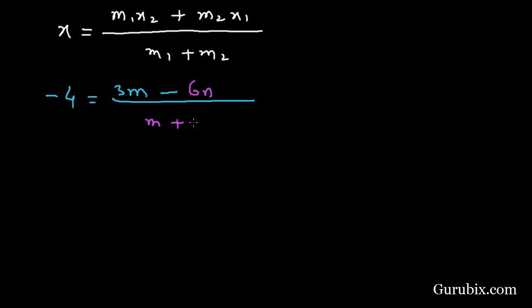Now we shall solve this equation. For that we shall cross multiply, then it will be -4M - 4N = 3M - 6N.